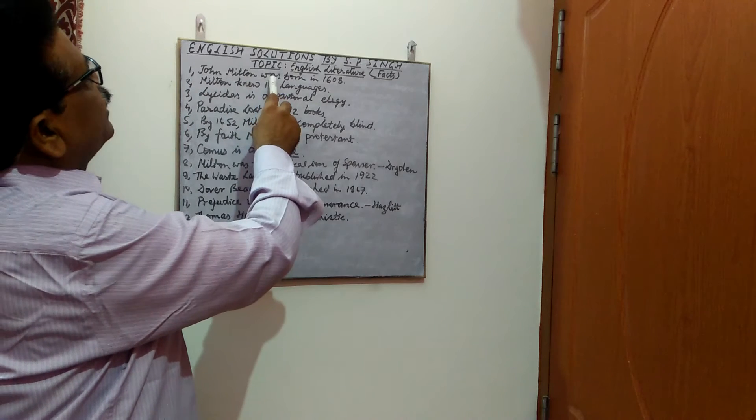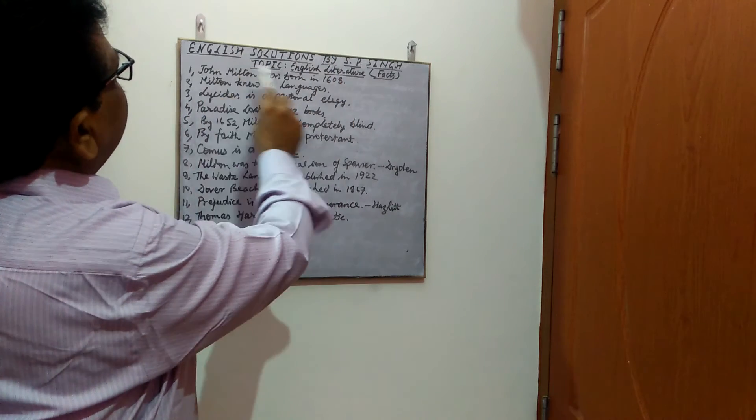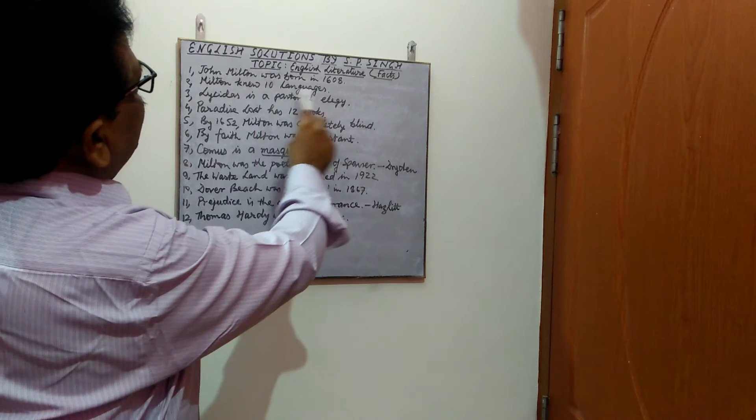John Milton was born in the year 1608. Milton knew 10 languages. Lysidas is a pastoral elegy.